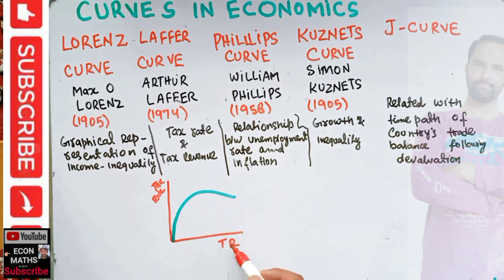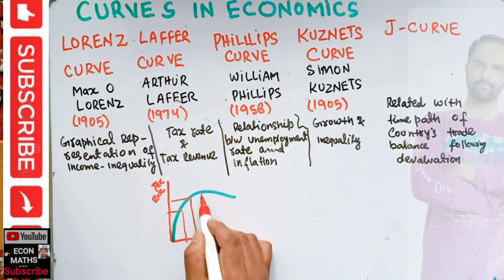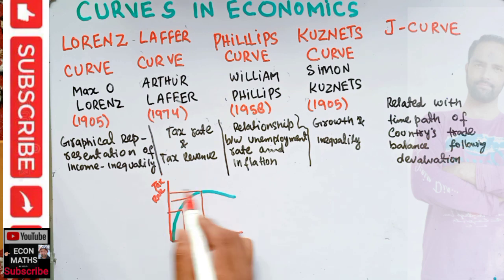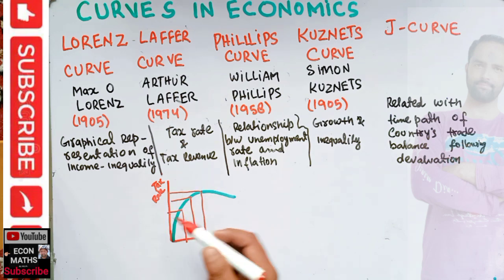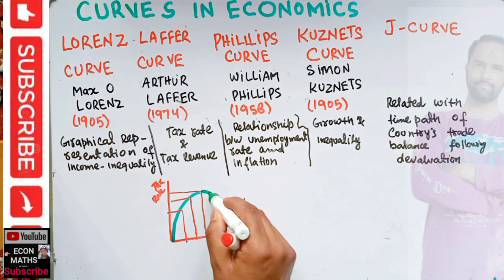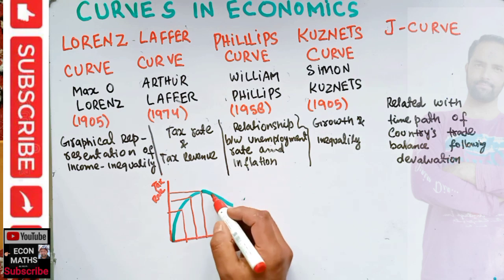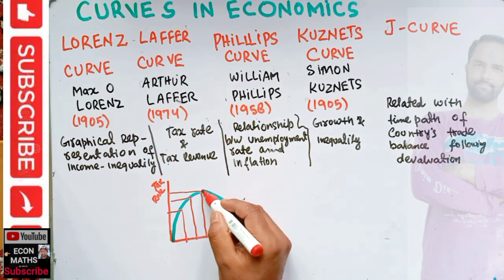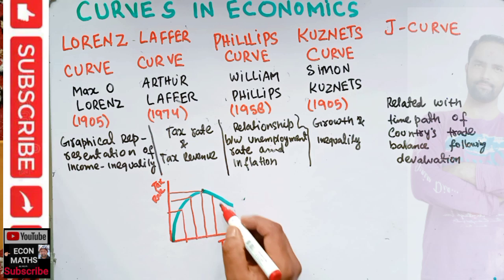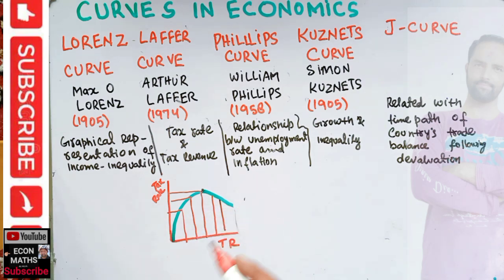Initially, if we increase the tax rate, our tax revenue will increase. But after reaching a certain threshold level of tax rate, if we increase the tax rate further beyond that threshold point, our tax revenue will start decreasing. This relationship was described by Arthur Laffer.